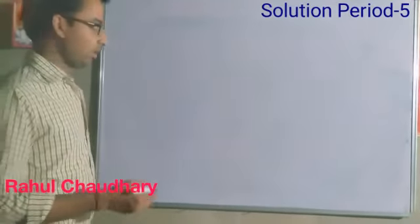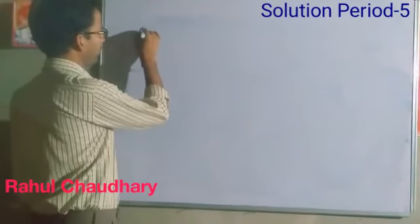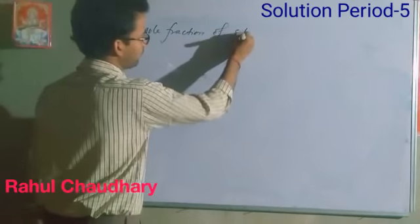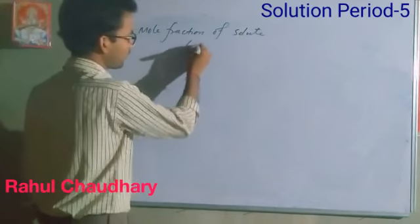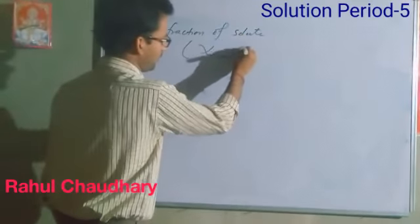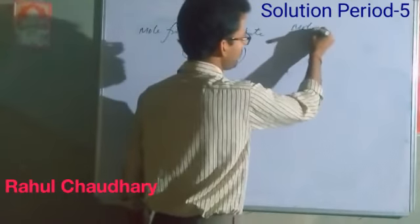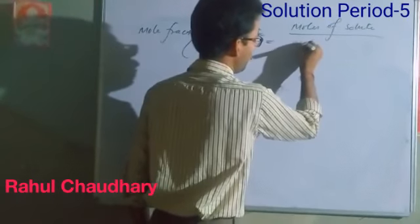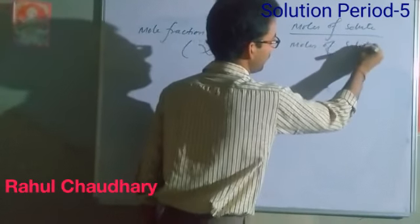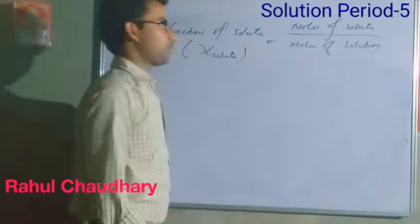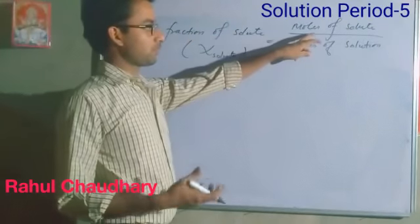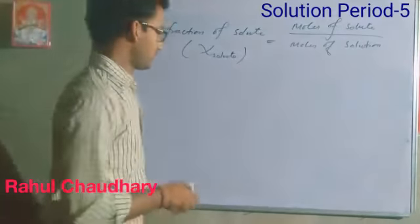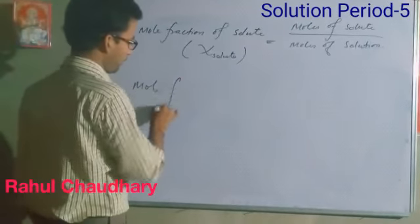According to the definition of mole fraction, the mole fraction of solute — we can denote it as — is equal to moles of solute divided by the total number of moles of solution. That is, how much of the total moles of solution are moles of solute — that ratio is called the mole fraction of solute.